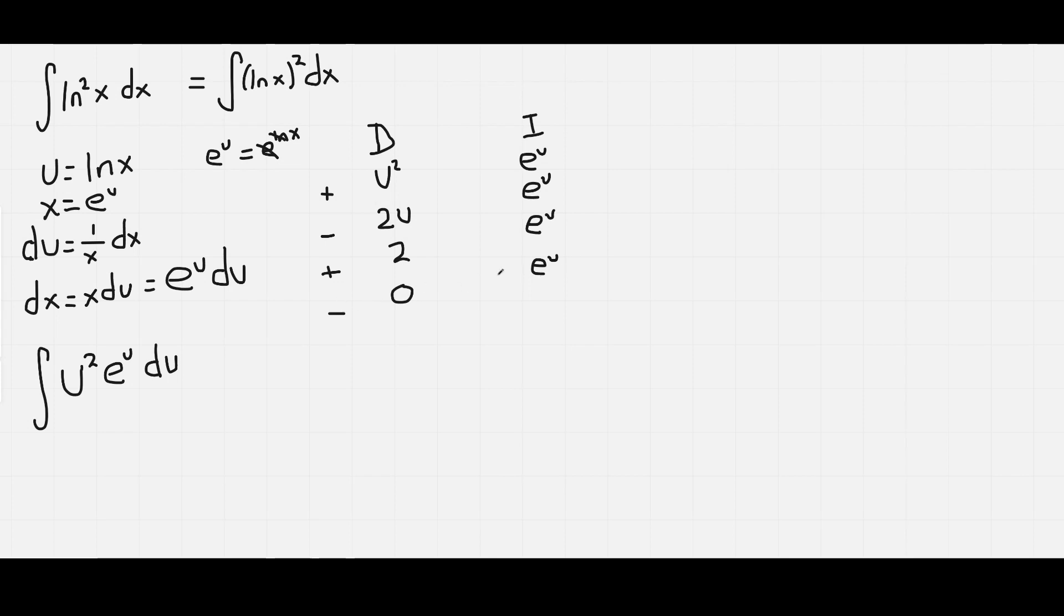So all we need is the diagonal products here. So we have u squared e to the u minus 2u e to the u plus 2 e to the u.